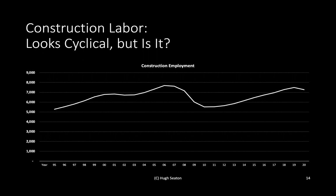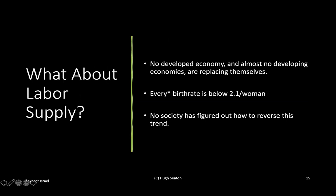Looking at the graph, you can see the huge dip after 2008 that took time to recover and looks very cyclical. But underlying it is the reality that birth rates have not been at replacement level for a very long time — I think since the 1940s in the U.S. No developed economy and almost no developing economies are replacing themselves. Demographers measure this per woman: the replacement rate is 2.1, accounting for bad things happening. Nobody's birth rate is over 2.1.